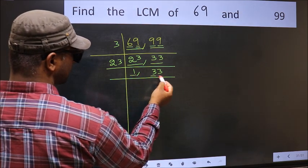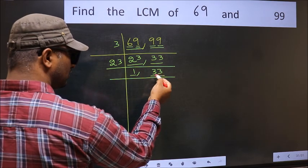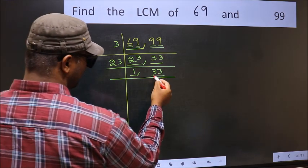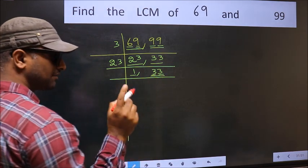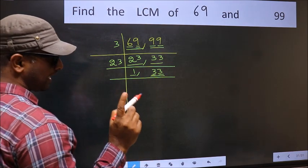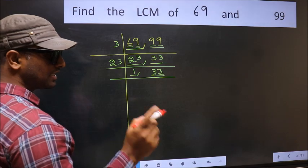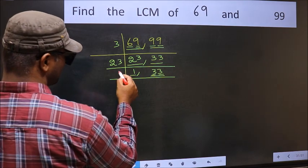So focus on the next number 33. You observe here, each digit is 3. So this number is divisible by 3. And most important, 3 is a prime number. So we take 3.